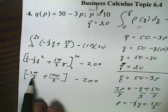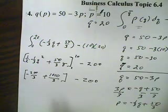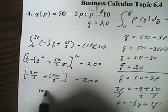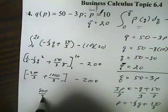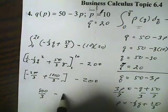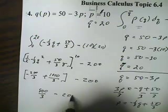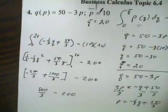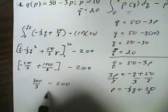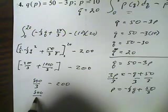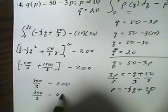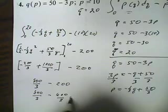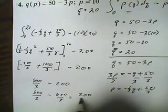So, negative 200 over 3 plus 1,000 over 3 gives me 800 over 3 minus 200. Okay, I'm going to make this 600 over 3, and that'll give me 200 over 3.